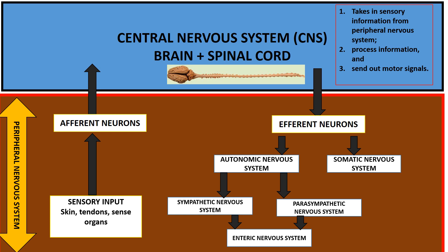In short, that is how the central nervous system and the peripheral nervous system interact with each other — mainly via two very important neurons known as the afferent neurons and efferent neurons.